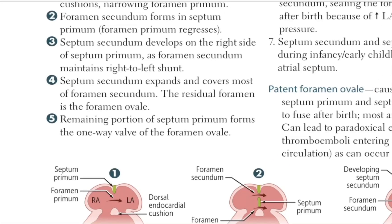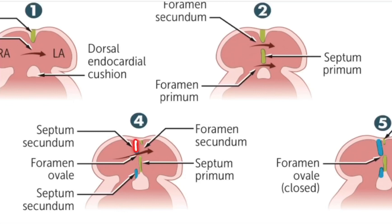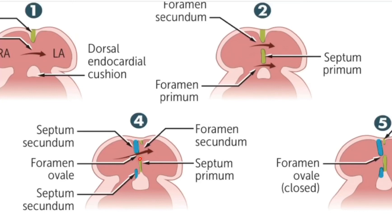In the fourth step, the septum secundum expands — it grows downwards and covers most of the foramen secundum. The residual foramen is called as the foramen ovale. This is very high yield. In this diagram, the blue color is the septum secundum, which grows towards the endocardial cushion. Between the two green lines is the foramen secundum, which is majorly covered by the septum secundum. The foramen ovale is formed between the septum secundum and septum primum.